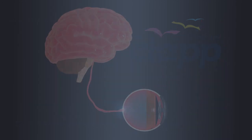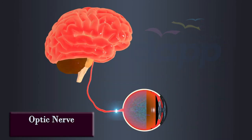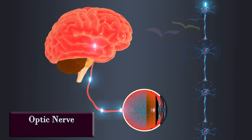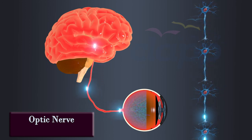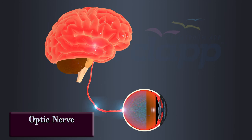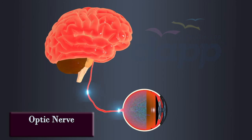The electrical signals are then transmitted through the optic nerve to the brain for further processing. The optic nerve is a bundle of nerve fibers that carries the electrical signals from the retina to the brain. It exits the eye at the back of the eyeball and carries visual information to the visual cortex in the brain.